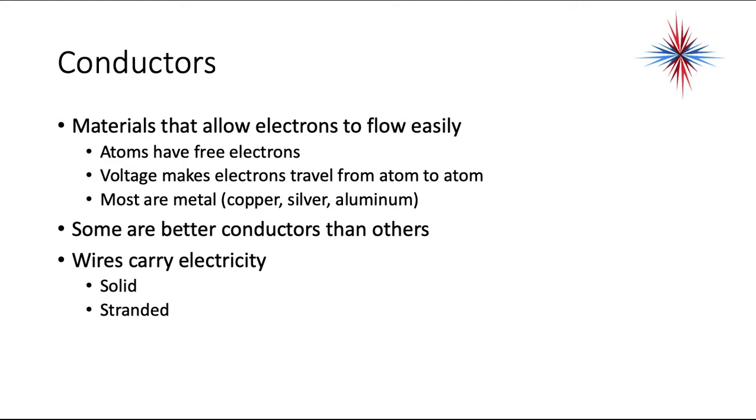Conductors are materials that allow electrons to flow easily. Atoms have free electrons. Voltage makes electrons travel from one atom to another atom. Most are metal. Copper, silver, and aluminum are great conductors. Some are better conductors than others. Wires carry electricity, and they can be solid or stranded.